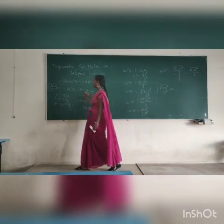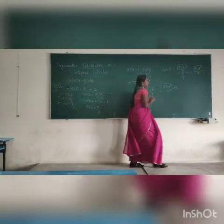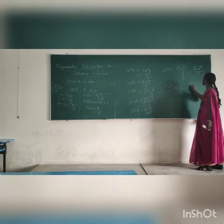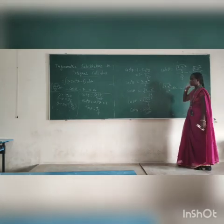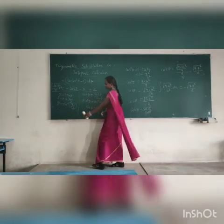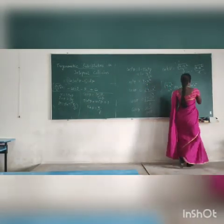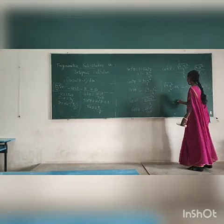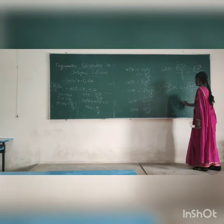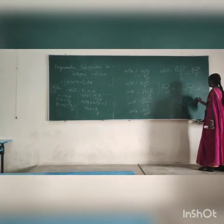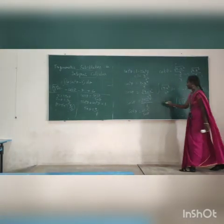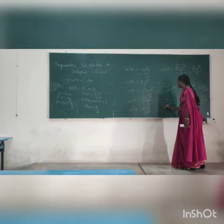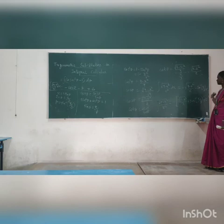We already have the answer in terms of theta, and now we change the values in terms of algebraic equations. So minus cot theta equals minus root of 9 minus x squared divided by x, and minus theta equals minus sin inverse of x by 3. Taking minus common, the final answer is: minus root of 9 minus x squared divided by x, minus sin inverse of x by 3, plus c.